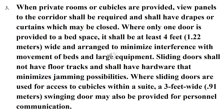When private rooms or cubicles are provided, view panels to the corridor shall be required and shall have drapes or curtains which may be closed. Where only one door is provided to a bed space, it shall be at least 1.2 meters wide and arranged to minimize interference with movement of beds and large equipment. Sliding doors shall not have floor tracks and shall have hardware that minimizes jamming possibilities. Where sliding doors are used for access to cubicles within a suite, a one-meter swinging door may also be provided for personnel communication.